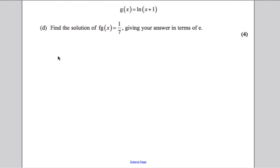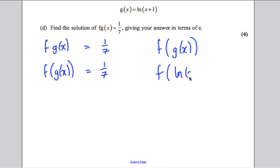Lastly, find the solution of the following. Now, you must get this right. fg(x) equals 1/7. Let's just take a second over here to write down what that means. fg(x) means f of g(x). So f(g(x)). f(x) equals 1/7. And that means, what is g(x)? It's ln(x+1). You'll work out f of ln(x+1). So you're saying that f(ln(x+1)) equals 1/7.